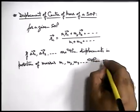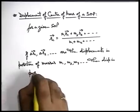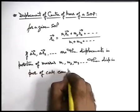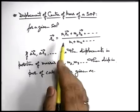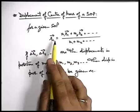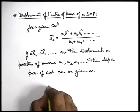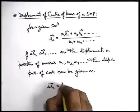we can directly find out the displacement in position of centre of mass. By applying delta on both sides of equality, as m-one, m-two are all constants, we can find the displacement in position vector of centre of mass can be written as